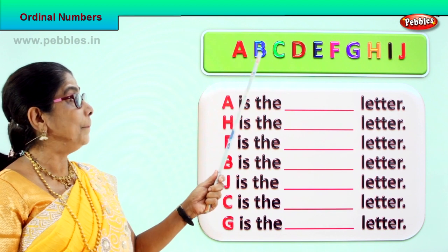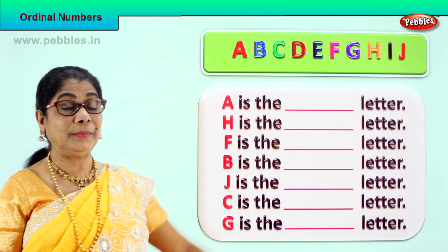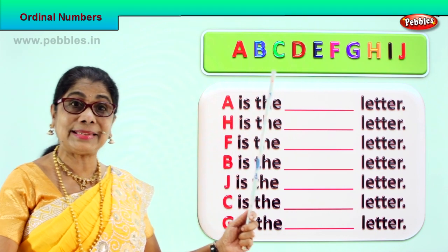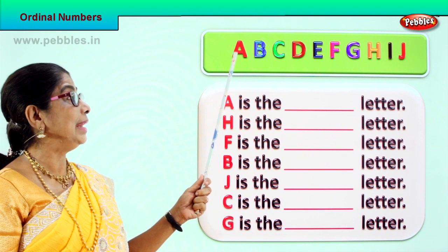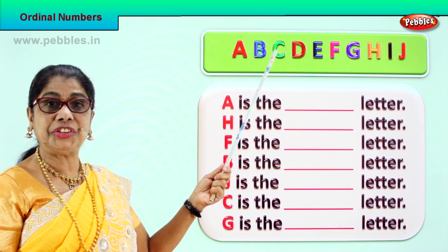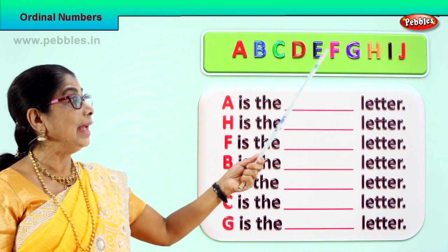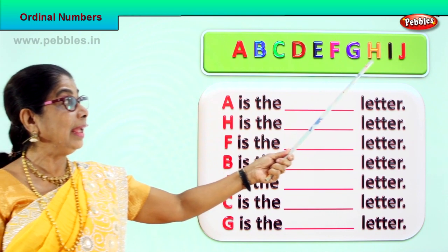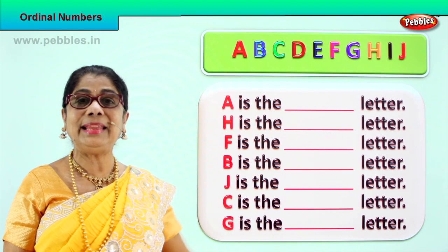A, B, C, D, E, F, G, H, I, J. Now all these letters are put in order. A is in the first place, B in the second place, C in the third, D in the fourth place, E in the fifth place, F in the sixth place, G in the seventh place, H in the eighth place, I in the ninth place, and J in the tenth place.